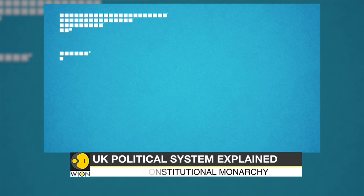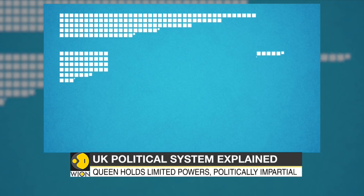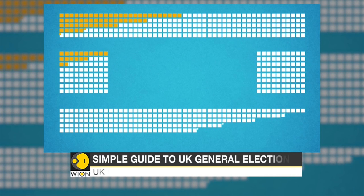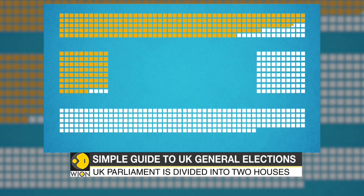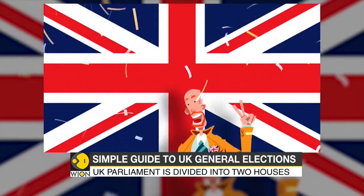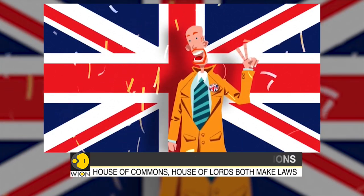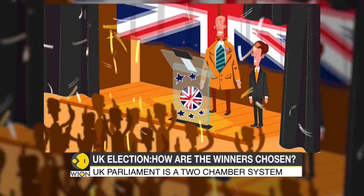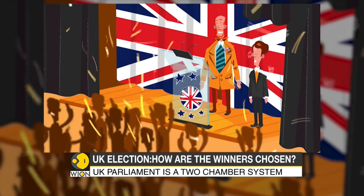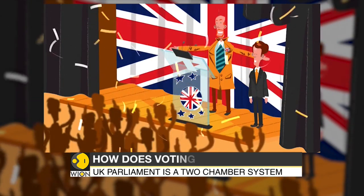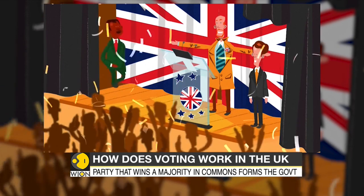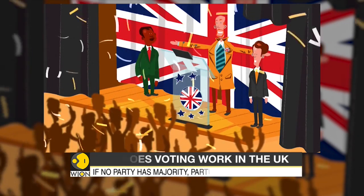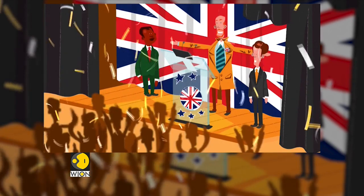A political party that wins an overall majority in the House of Commons, with 326 seats or more, at a general election forms the new government and its leader becomes Prime Minister. As a general rule, if no party wins an absolute majority, the party with the largest number of seats may form a government by forging an alliance with one or more smaller parties, such as the Liberal Democrats, the Scottish National Party, or the Eurosceptic Brexit Party.